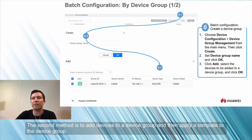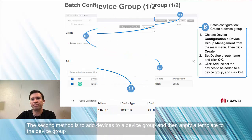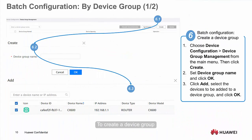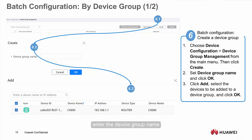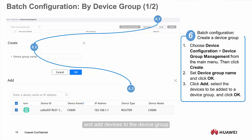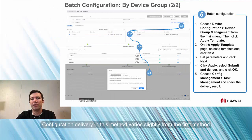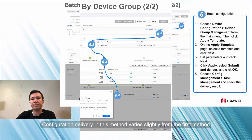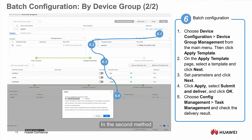The second method is to add devices to a device group and then apply a template to the device group. To create a device group, go to the Device Group Management page, click Create, enter the device group name, and click OK. Then click Add and add devices to the device group. In this method, we apply a template to the device group, which then takes effect on all devices in the device group.